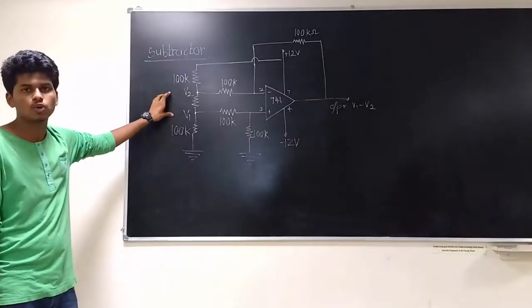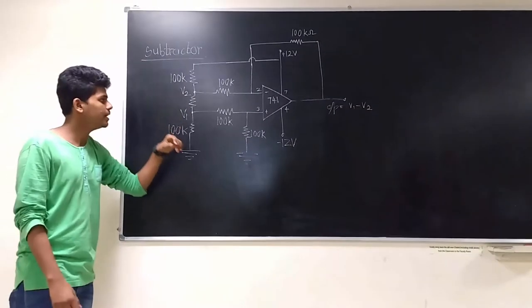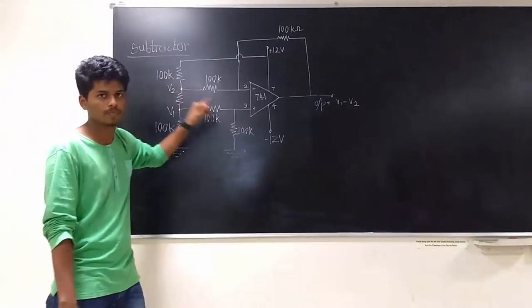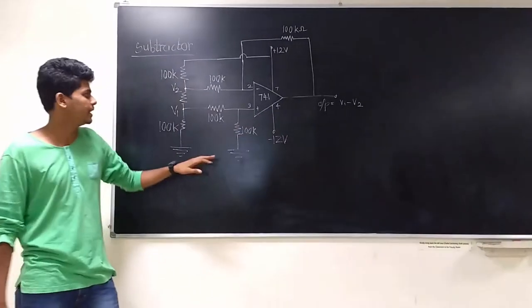Two voltages are applied due to the arrangement of this circuit and the output obtained is V1 minus V2. Now let's look into the breadboard implementation of this circuit.